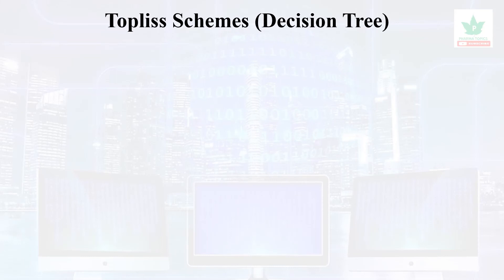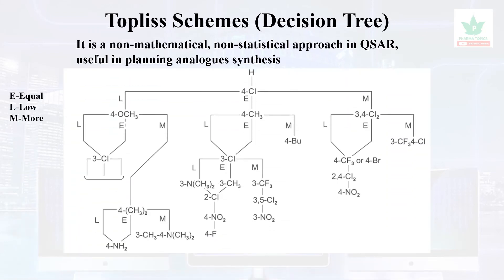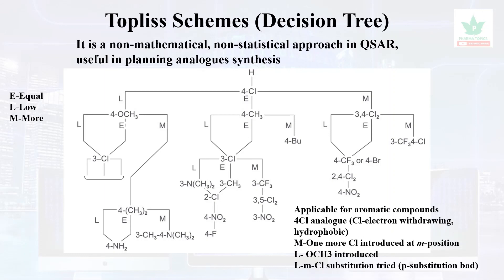The next approach in QSAR is the Topliss scheme, which is a decision tree model. It is a non-mathematical, non-statistical approach useful in planning the synthesis of a series of analogues. It is applicable for aromatic substitutions. For example, starting with a 4-chloro analog — when chlorine is added and activity increases, one more chlorine is added. If the activity then decreases, it is removed and substituted with an O-methyl substitution. If the activity is still less, a meta-chloro substitution is tried. It operates like a tree model, testing substitutions and branching based on activity outcomes.